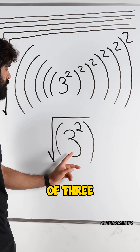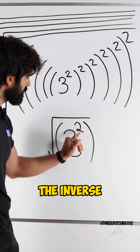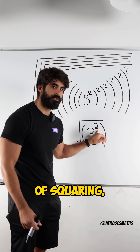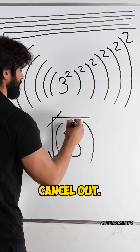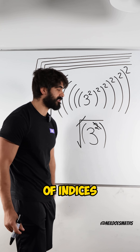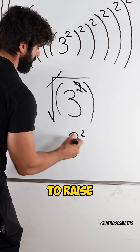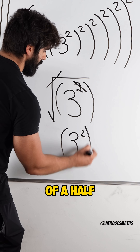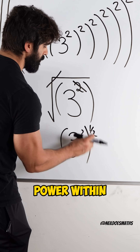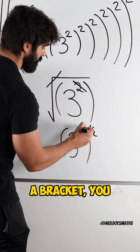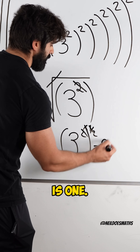We're doing the root of three squared. Root is the inverse function of squaring, which just means they cancel out. We can look at this in terms of indices as well. Rooting means to raise to the power of a half. And when you have a number raised to a power raised to another power within a bracket, you multiply the powers. And a half of two is one.